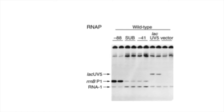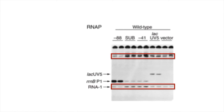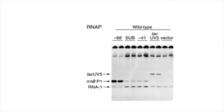One more notable observation: look at the band intensities in the other lanes in the lane 88 condition — they appear weaker. This makes sense because there's only so much RNA polymerase available. With the UP element present in lane 88, RNA polymerase disproportionately binds to that promoter over the others in the vector. At this point they know the UP element increases transcription, but they don't yet know which part of RNA polymerase is interacting with it. That leads to the second experiment.